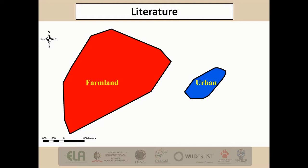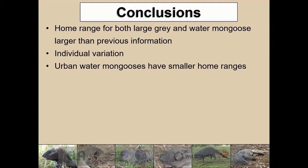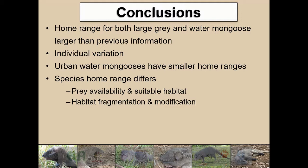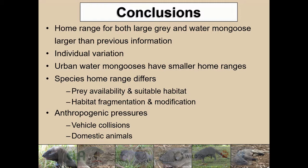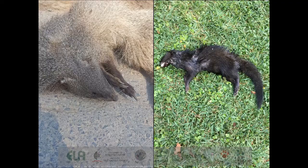The home range for both the large grey and water mongoose was much larger than previous information indicated, highlighting significant underestimation of these individuals' home range requirements. They also persist individual variations within the species, which is a growing body of evidence within ecology. Urban water mongoose also had much smaller home ranges than their farmland counterparts, which highlights the species' ability to adapt to the environment around them and to make the most of fragmented patches within the urban study site. Species' home ranges differ in size potentially due to prey availability, suitable habitats, as well as processes of habitat fragmentation and modification affecting their spatial movements. Anthropogenic pressures such as vehicle collision and domestic pet interactions seem to be an ongoing threat for these species, as seen in the picture showing a large grey that had a collision with a vehicle and a water mongoose that came off worse with an interaction with a domestic pet.